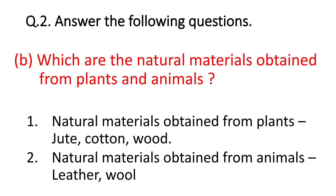Second question: which are the natural materials obtained from plants and animals? The natural materials obtained from plants are jute, cotton and wood. The natural materials obtained from animals are leather and wool — we use sweaters, shawls and blankets made up of wool, which are obtained from animals. In this way, these are some natural materials obtained from plant and animal sources.